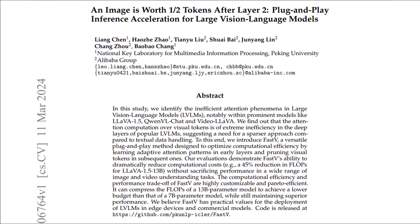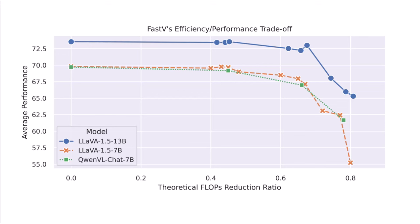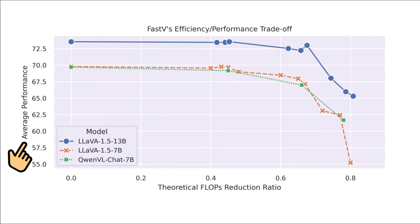More specifically, they show in a figure that on the x-axis we have the theoretical FLOPs reduction ratio, and on the y-axis average performance. If we reduce the FLOPs by a ratio of almost 50%, we have the same accuracy. Let's see how this works.